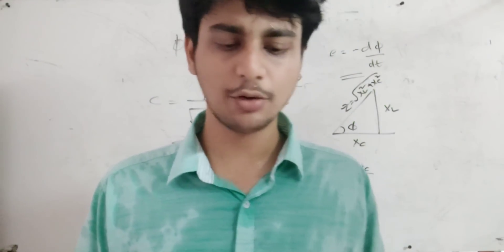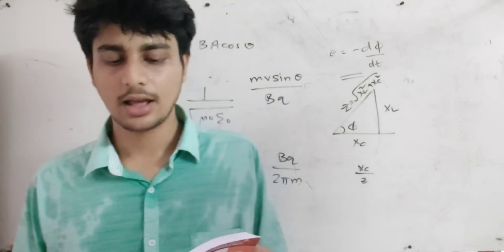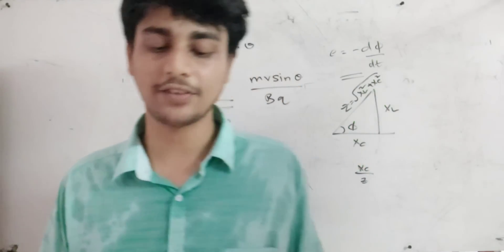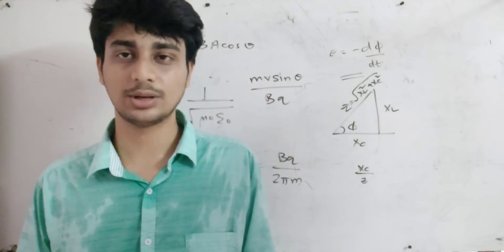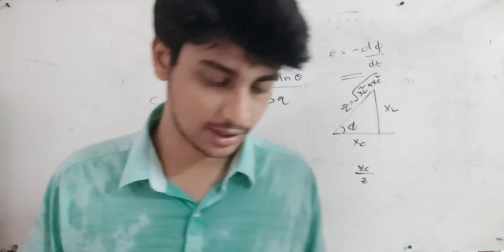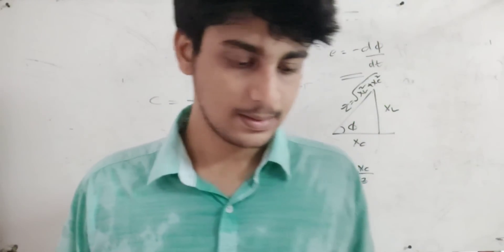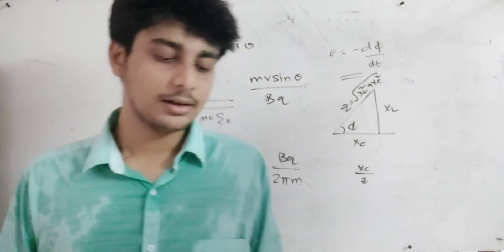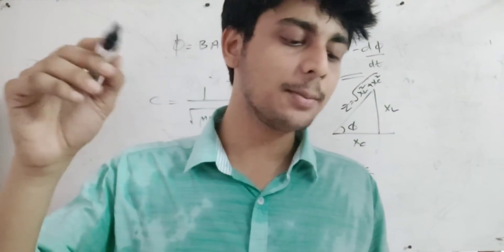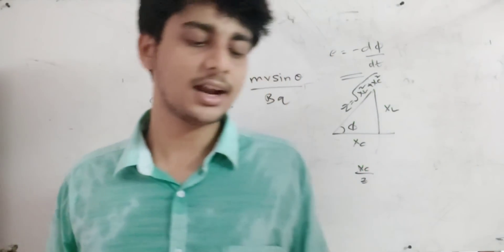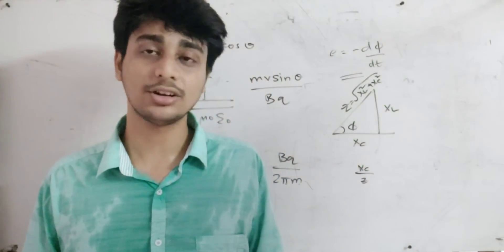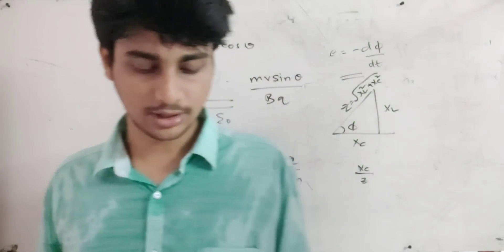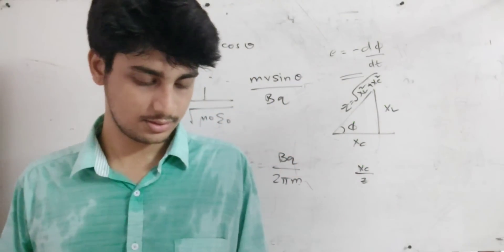Wave optics: I equals I max cos squared (φ/2). That's one equation. Delta beta divided by delta d is equal to lambda by d — fringe width equation.